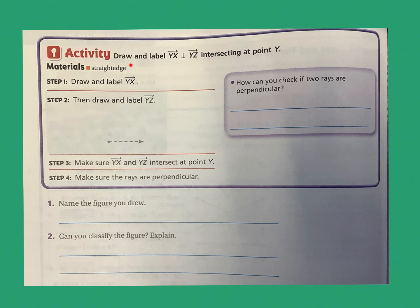Let's do this activity. We need to draw and label ray YX perpendicular to ray YZ, intersecting at point Y. A ray ends on one side and continues on the other. I'm going to draw and label ray YX like this.